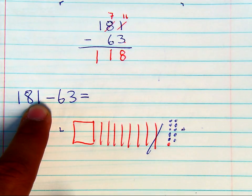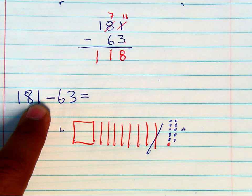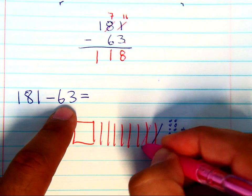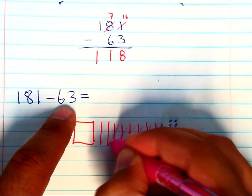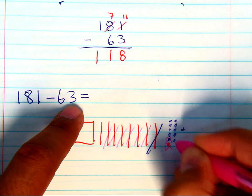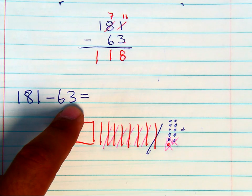And once you have done that, you can now take 6 tens away, 1, 2, 3, 4, 5, 6, and 3 ones. Let's see, let's take that one, that one, and that one. And what are you left with?